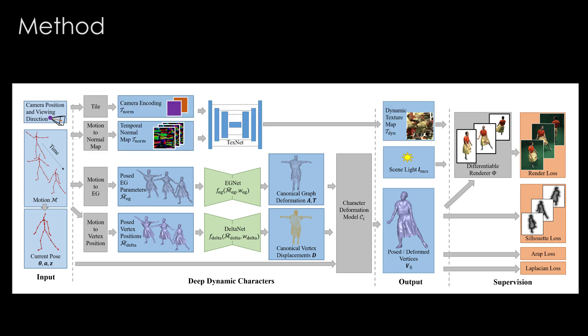Last, our dynamic texture network, TexNet, takes a motion and camera pose encoded in texture space and outputs a dynamic texture to further enhance the realism of our 3D character.